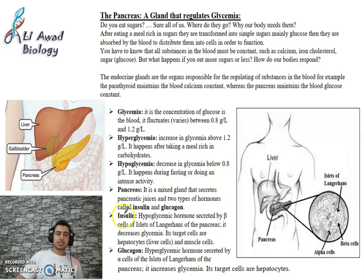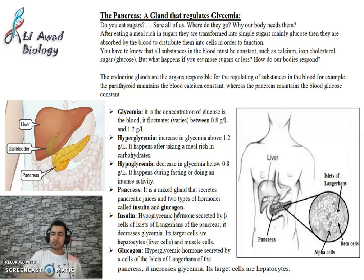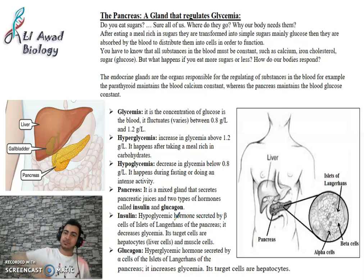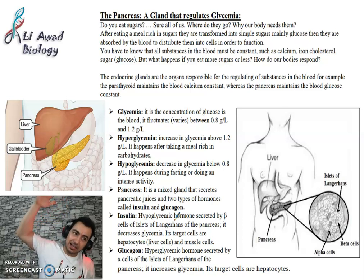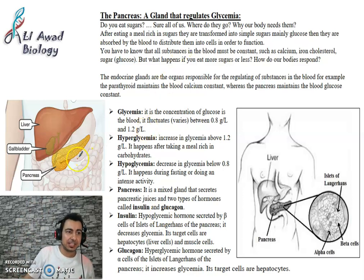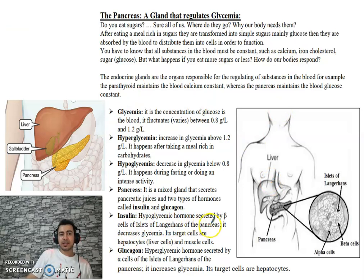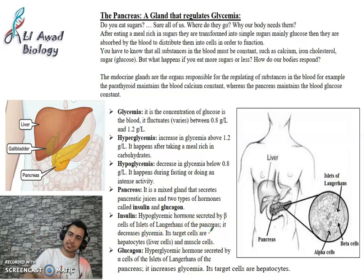What is the role of each hormone? Insulin is a hypoglycemic hormone — it causes hypoglycemia, meaning it decreases glycemia. If glycemia is high, the pancreas secretes insulin to decrease it back to its normal value. Insulin is a hypoglycemic hormone secreted by the Beta cells of the Islets of Langerhans. It decreases the amount of sugar in the blood.